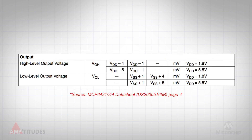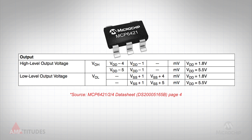Let's take a look at an example. The MCP6421 CMOS op amp from Microchip claims rail-to-rail input and output performance. Here is the specification table that highlights the VOH and VOL.